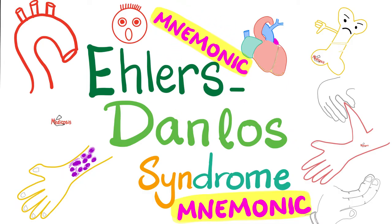In previous videos, we talked about cystinosis, cystinuria, homocystinuria. We talked about Marfan syndrome, which is a problem with elastin. But today we're talking about Ehlers-Danlos syndrome, which is a problem in collagen.